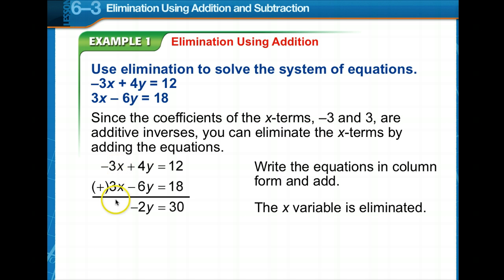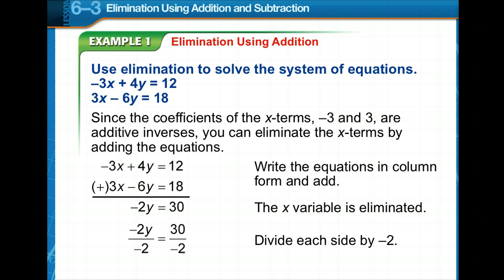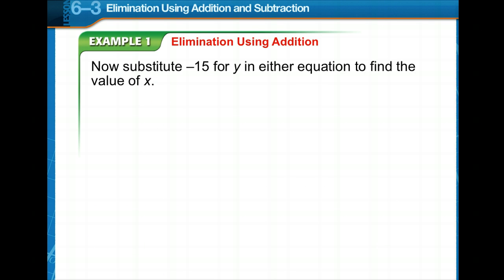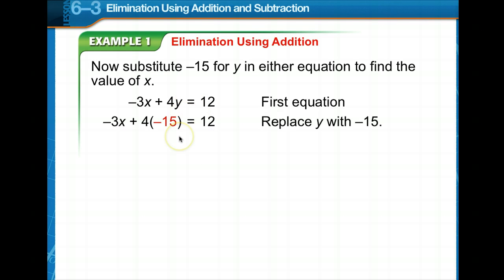Notice that the x variable is eliminated. 4y minus 6y is negative 2y, and 12 plus 18 is 30. So what do we do next? We're going to divide both sides by negative 2. In this instance, y is equal to negative 15.